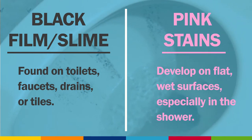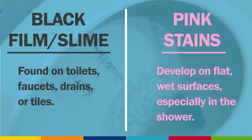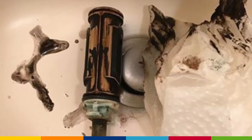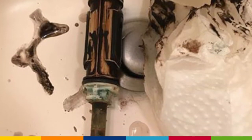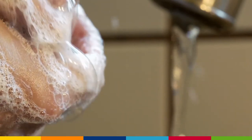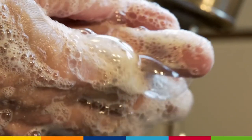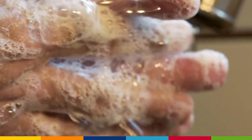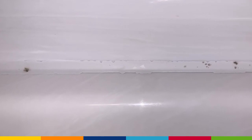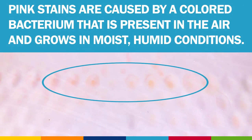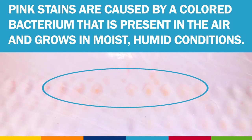Black film can be caused by mineral deposits from hard or soft water, or old plumbing. If the black residue is more of a slime, it is most likely caused by soap scum left behind as the water evaporates, or from soap or shampoos, or mold, mildew, or bacteria that grows in warm, wet places.